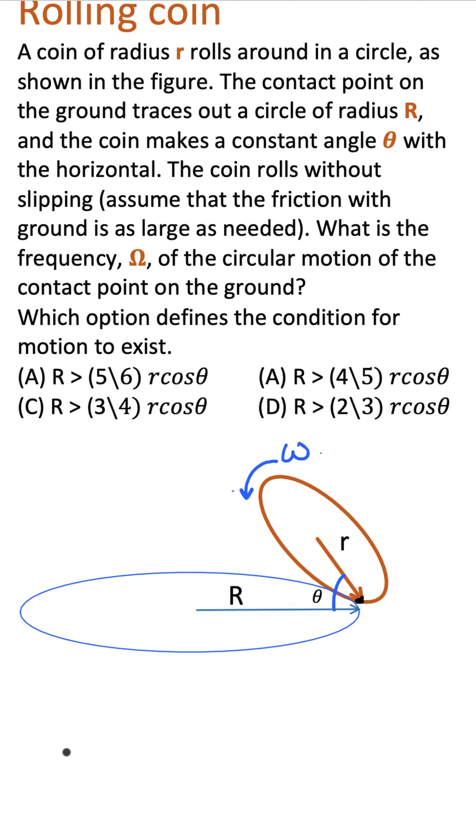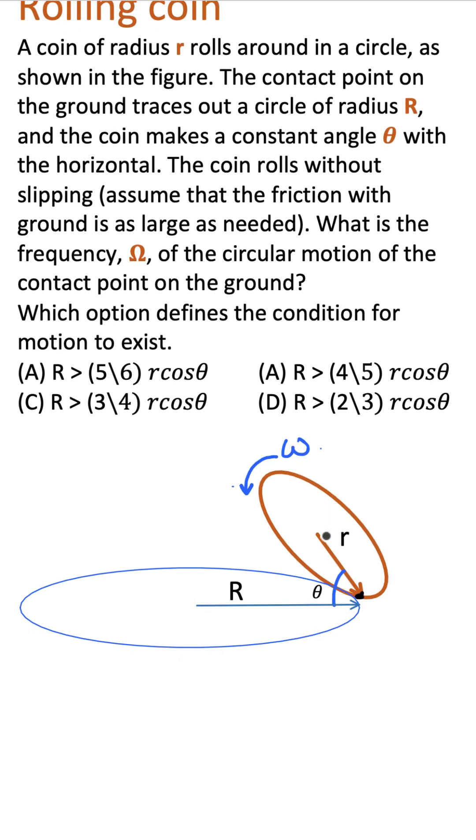Let me tell you how to approach this problem. This coin is rolling and also going around this circle. If you take an axis here, there is an omega here - that's what the question is asking. Since it is rotating counterclockwise, there is another omega in this direction.